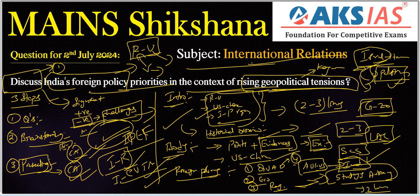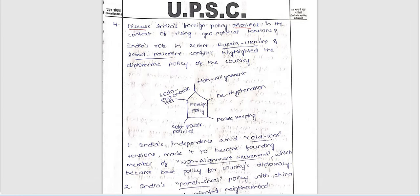All important points, examples, and recent current affairs examples are needed here. Upload your PDF answers — scanned, full-fledged, clearly written — in the upload or assignment section in the AKSIA new batch. The mains free initiative batch is there; please go there and upload your answer within time. We are giving time up to 2 PM or 3 PM every day, so from around 8 AM to 2 or 3 PM you need to upload your answer.